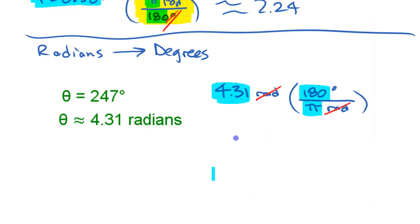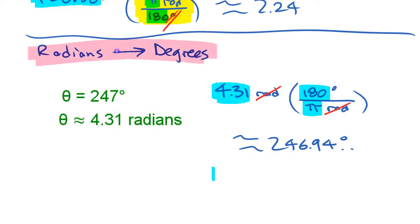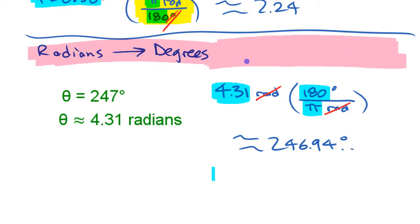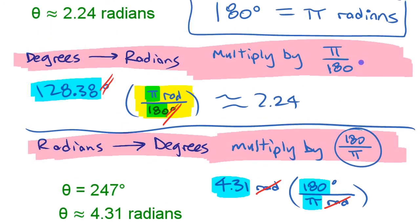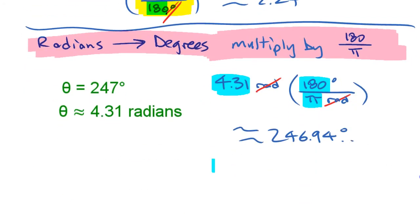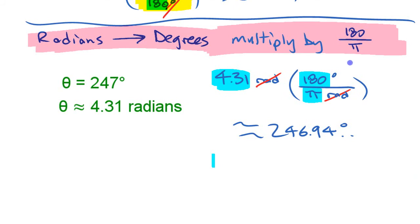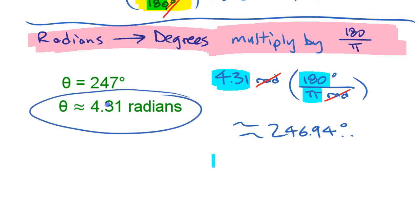So this is approximately 246.94 degrees. The key point: going radians to degrees, we multiply by 180 over pi — the opposite of before. That's how to convert between radians and degrees when working with decimal approximate values.